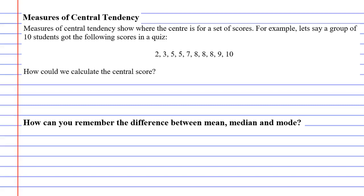Measures of central tendency show where the centre is for a set of scores. For example, let's say a group of 10 students got the following scores in a quiz.